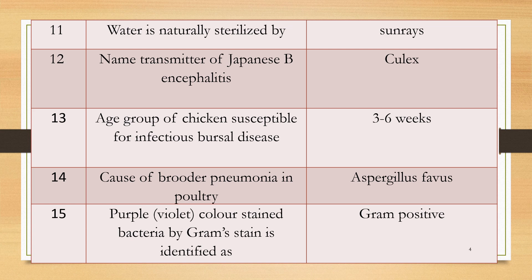Question 14: What is the cause of brooder pneumonia in poultry? This is a frequently asked question. Answer: Aspergillus flavus. Aspergillus flavus grows in damp areas, and in brooders there is also dampness, causing poultry to suffer from brooder pneumonia.